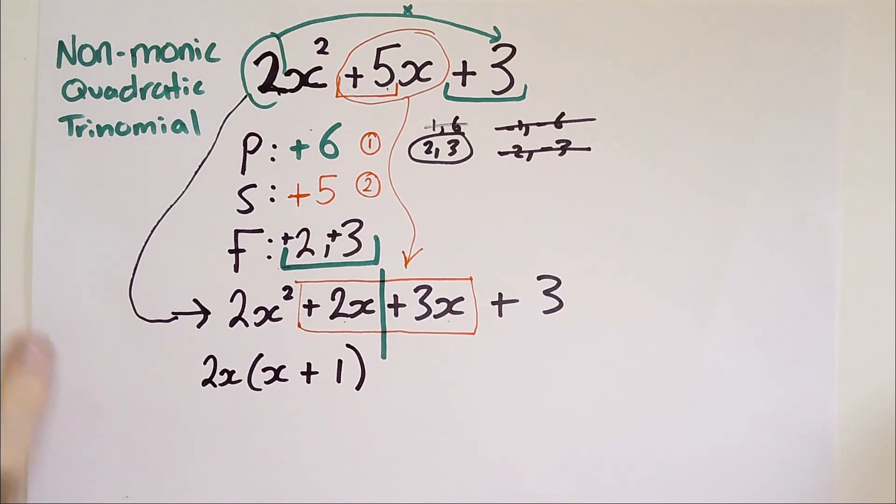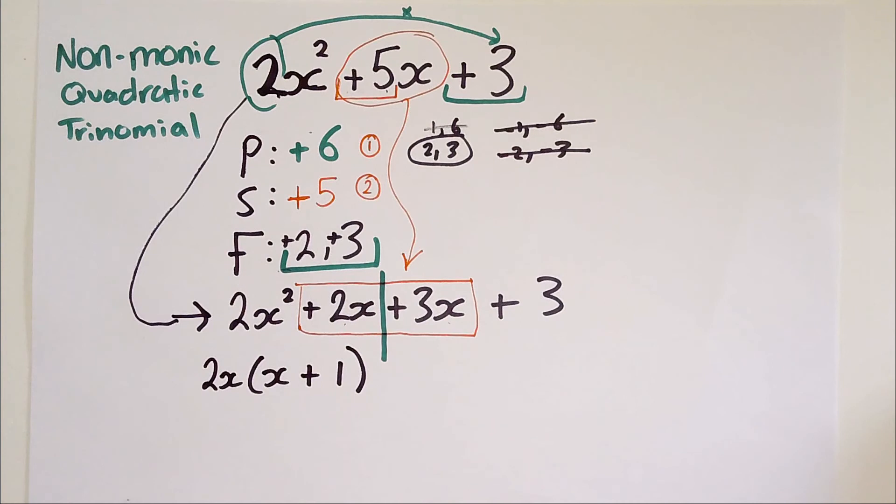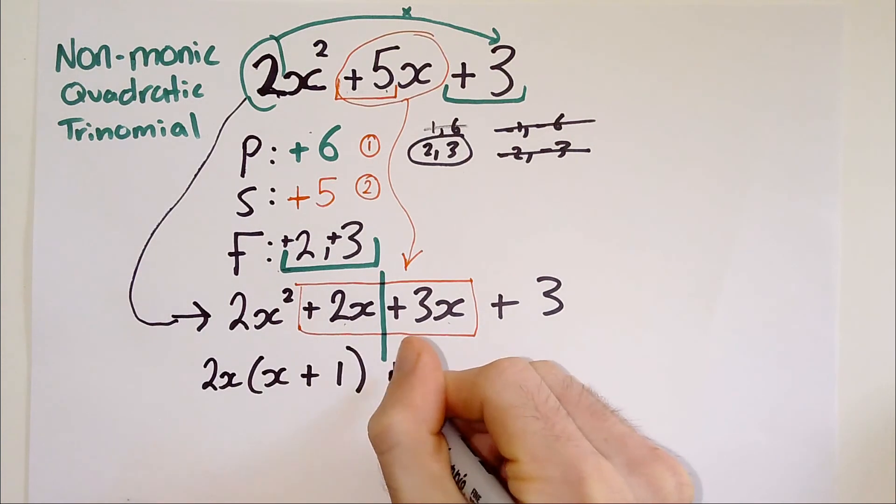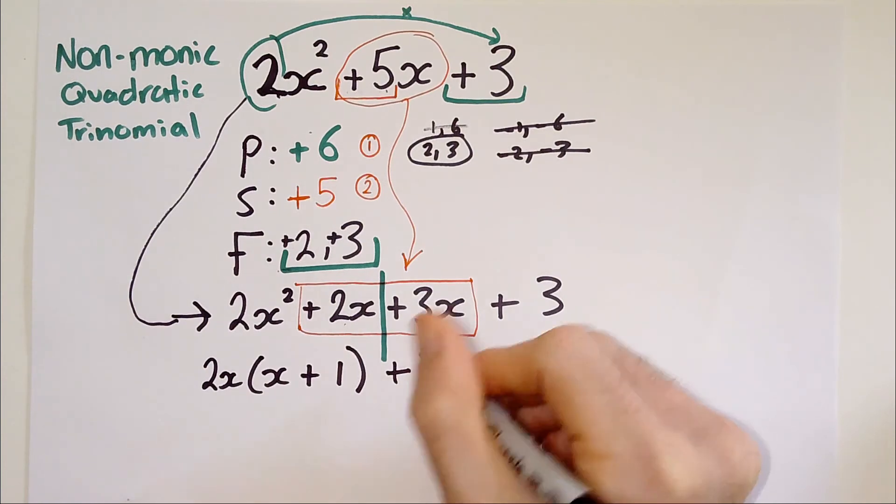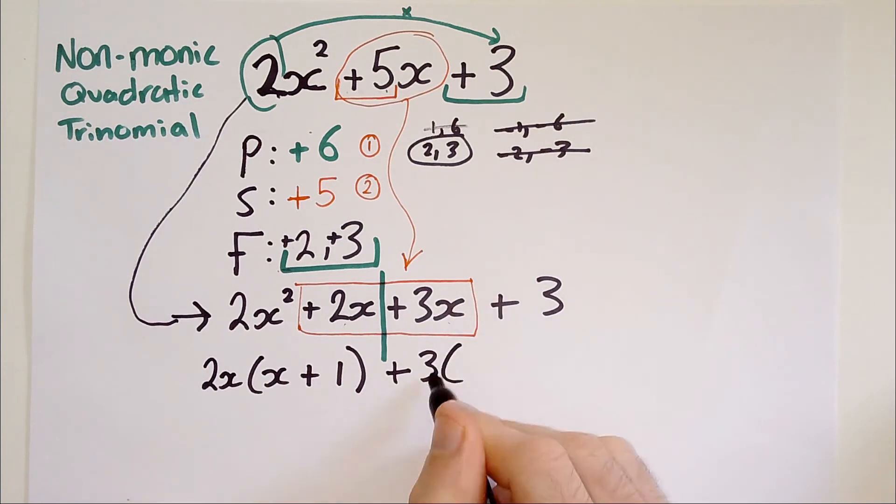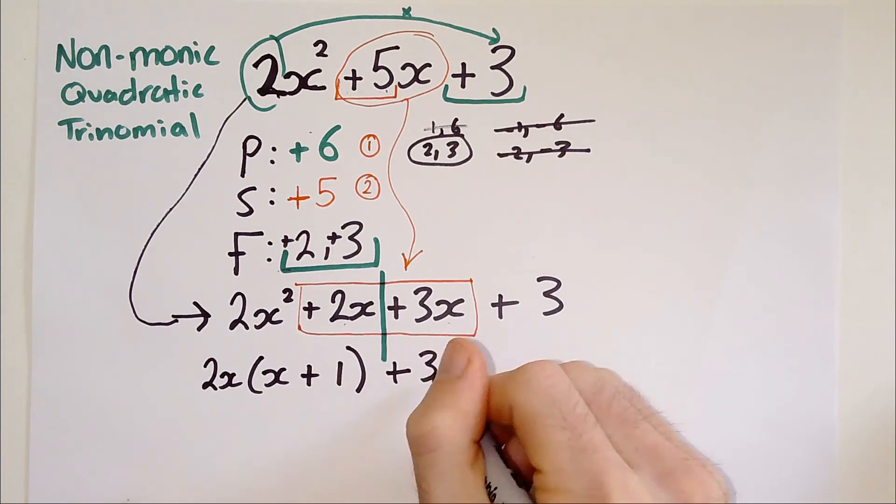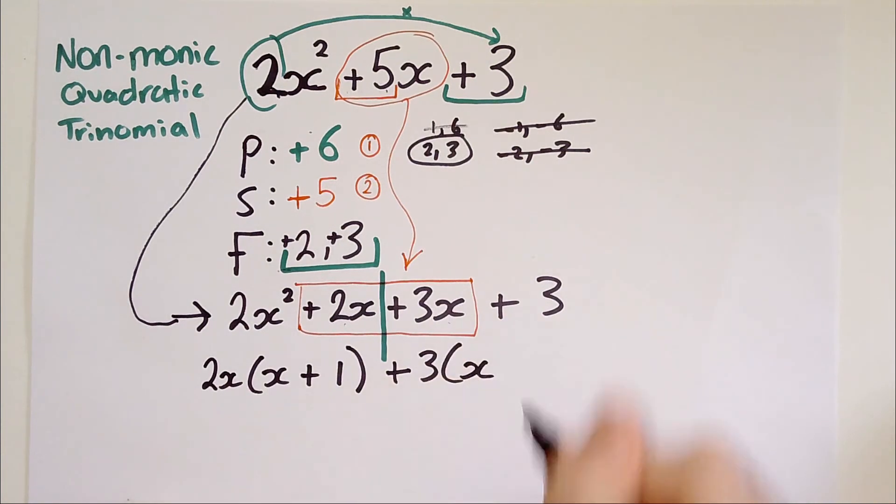Then the second half, we do plus three X plus three. We factorize those two now. We take out the highest common factor, plus three. You have to include the positive here because it's going to be in between these other terms. Plus three times what equals plus three X? Plus three times X would equal plus three X. And then plus three times what equals plus three? Plus one.